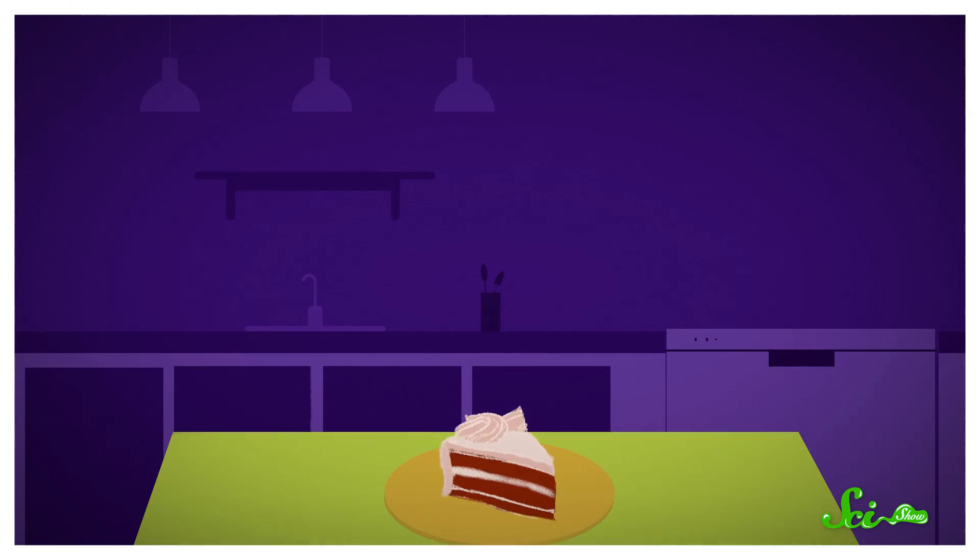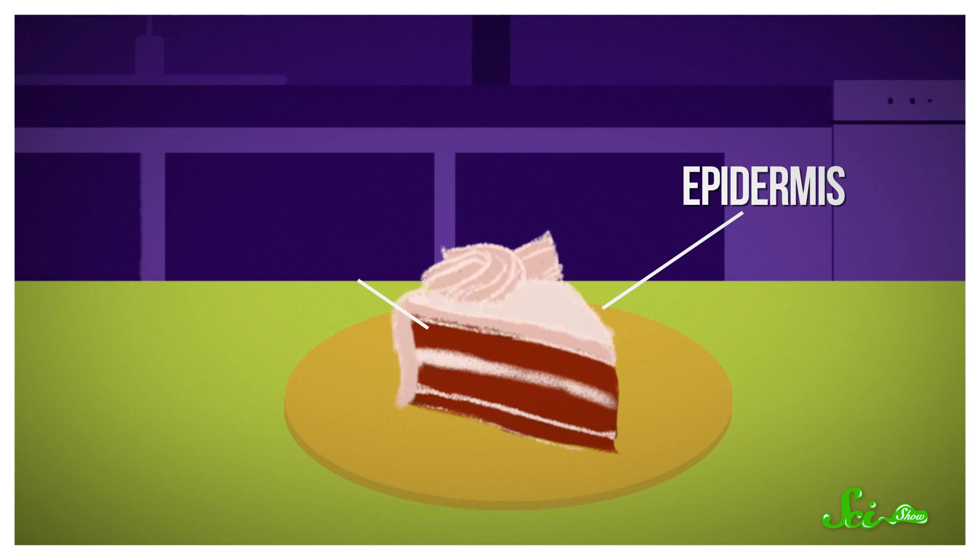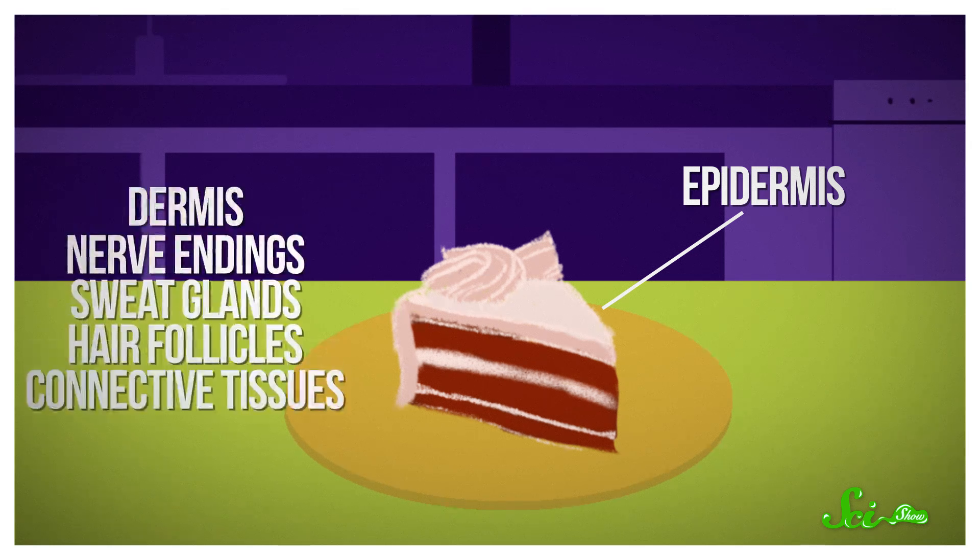Your skin is like a layer cake, and the icing on that cake is a thin layer of cells called the epidermis. The epidermis is supported by the dermis, which is where you'll find nerve endings, sweat glands, hair follicles, and connective tissue.